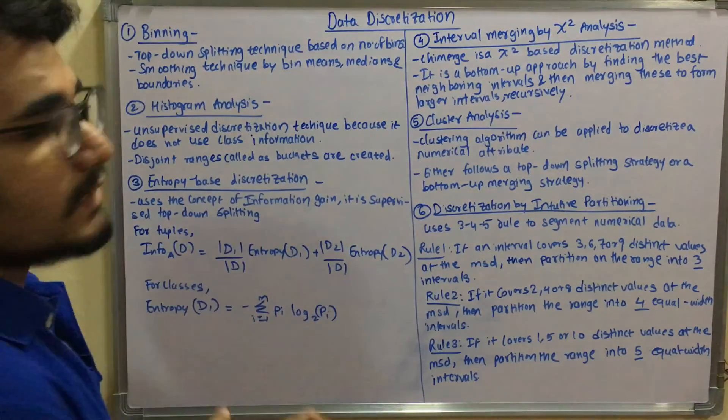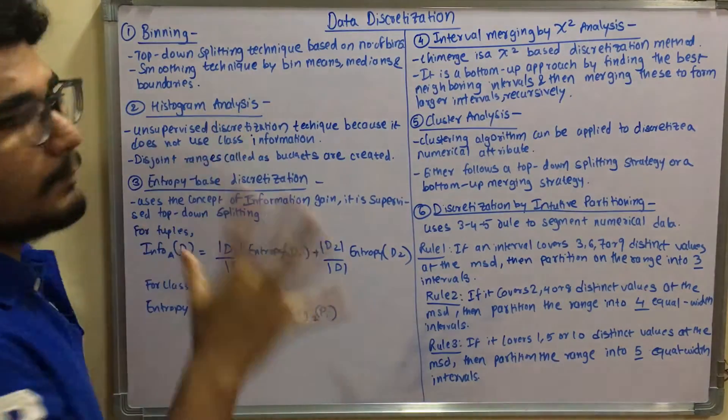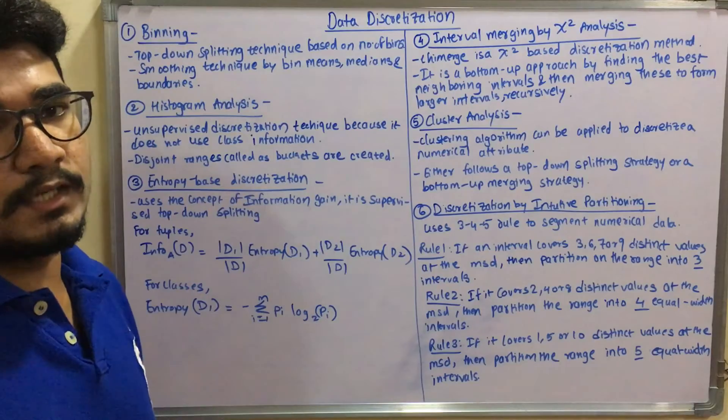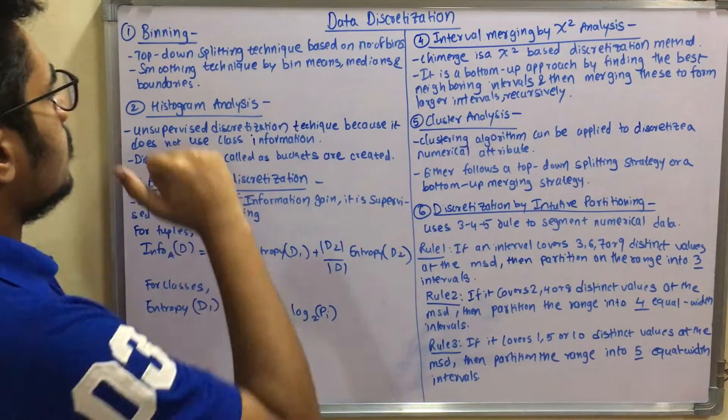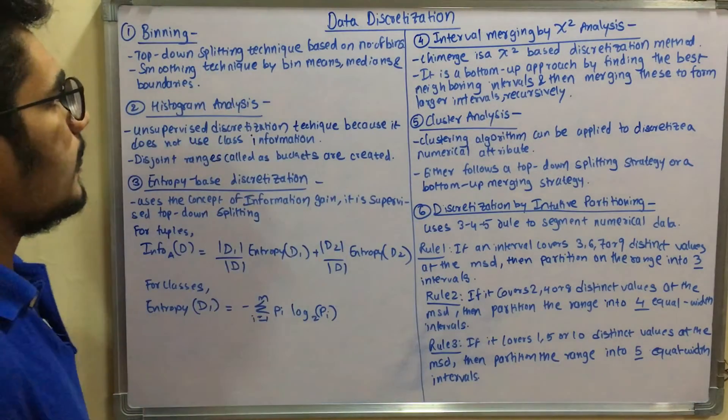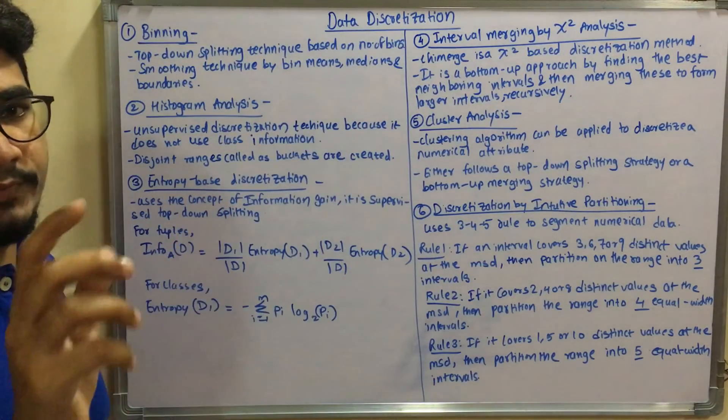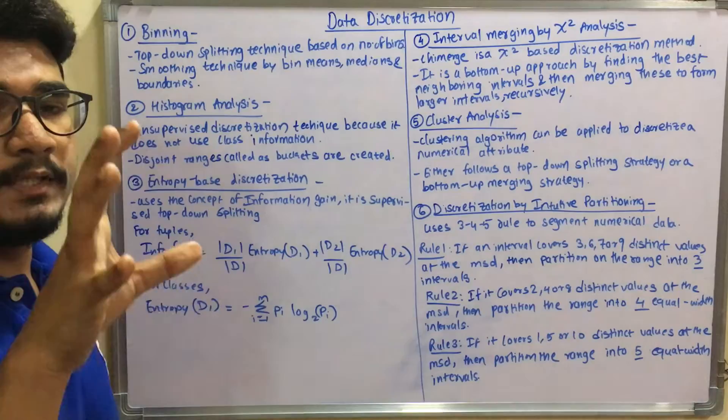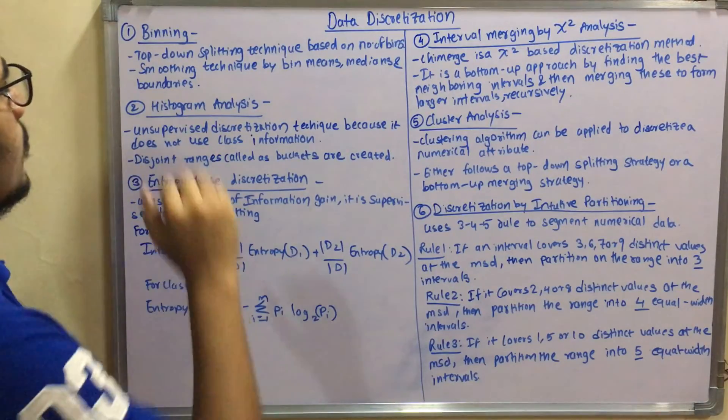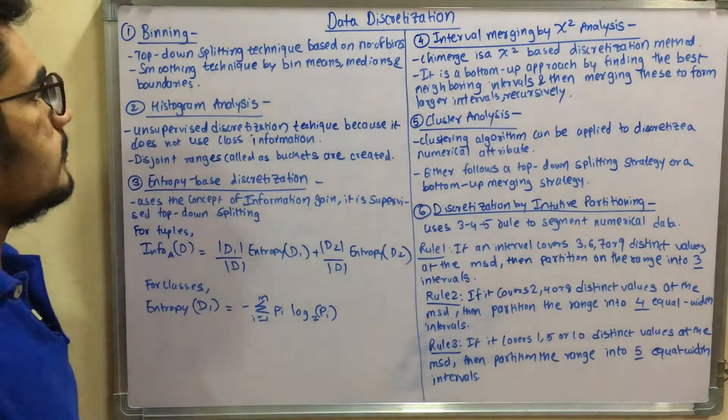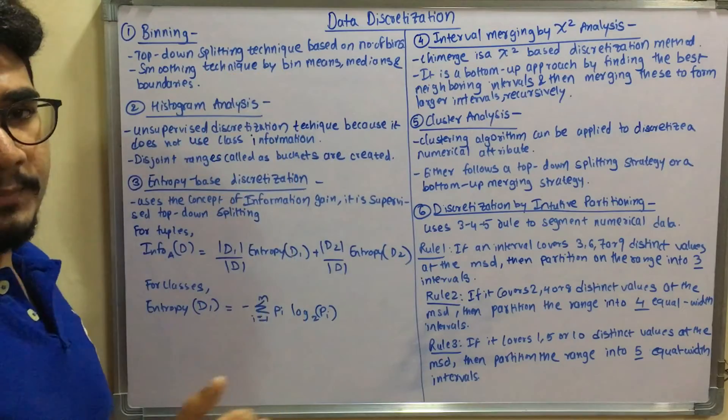We start with the very first one, that is binning. We have already studied this in our data cleaning technique. It's a top-down splitting technique based on the number of bins. It calculates by n by d, that is number of items divided by the total bin depth, and then you have certain smoothing techniques like binning by means, medians, as well as boundaries.